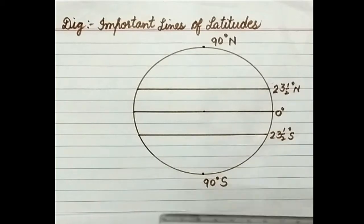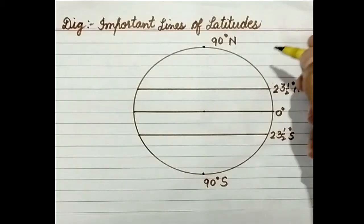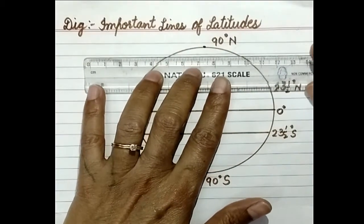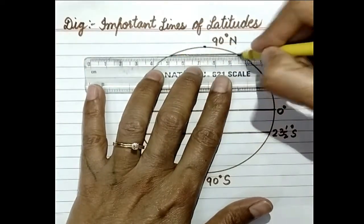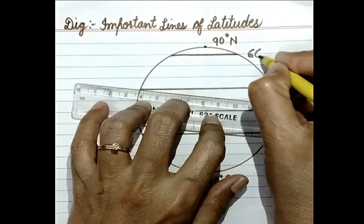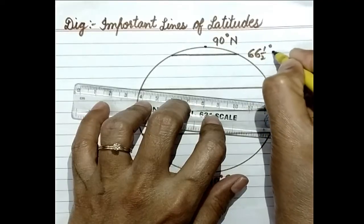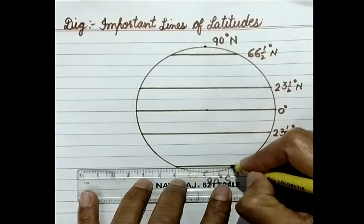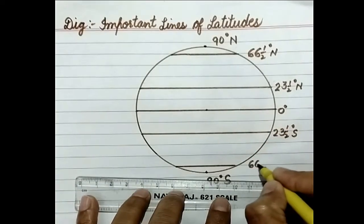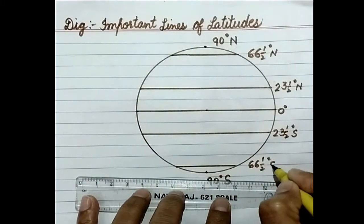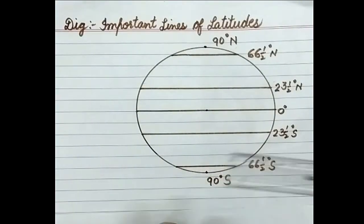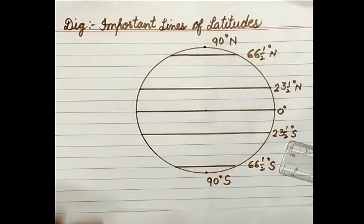Next we are to draw line at 66.5 degree. So I am going to draw it here, 66.5 degree north. Here also 66.5 degree south. 90 degree south and 90 degree north I have already shown with the help of points. Now we are to label it.